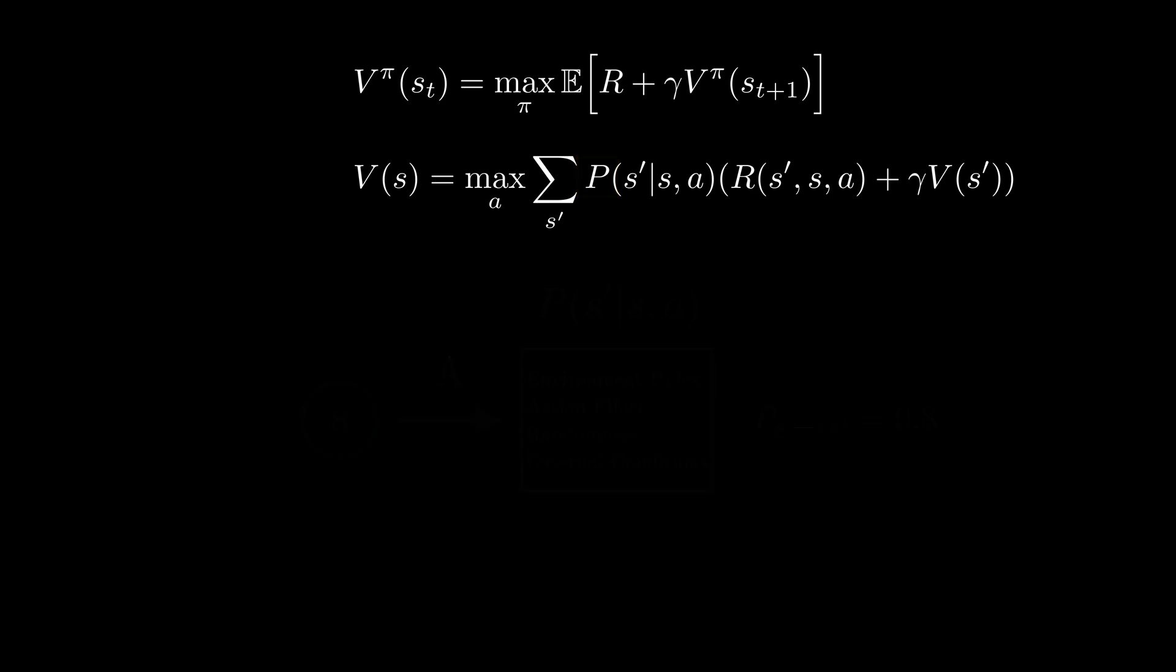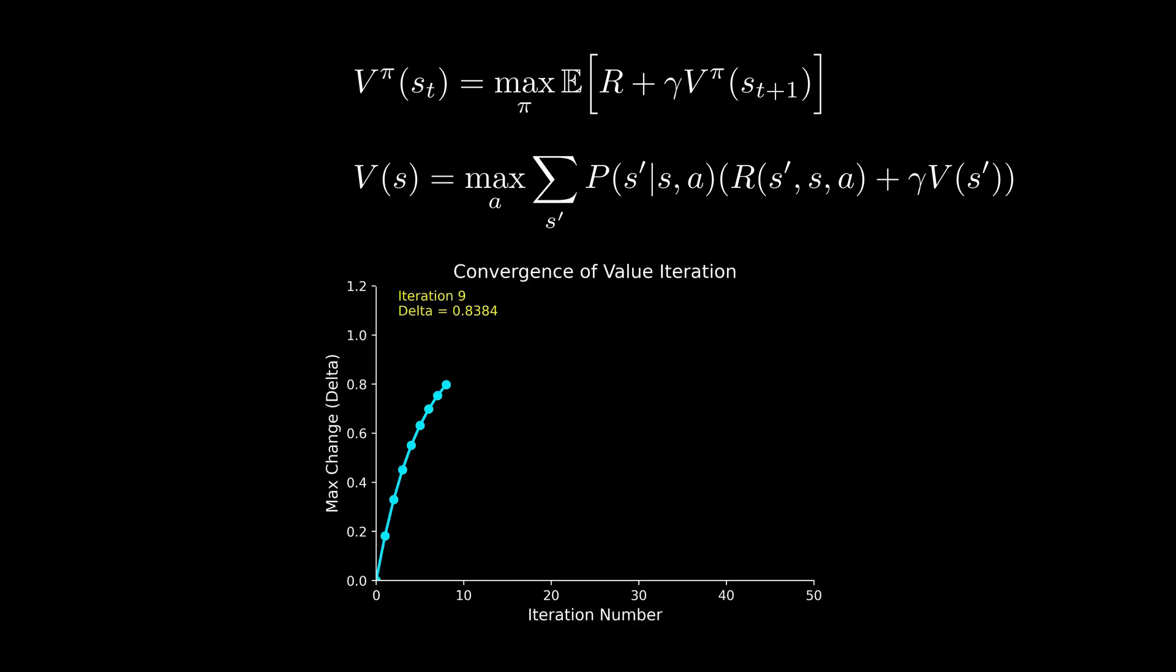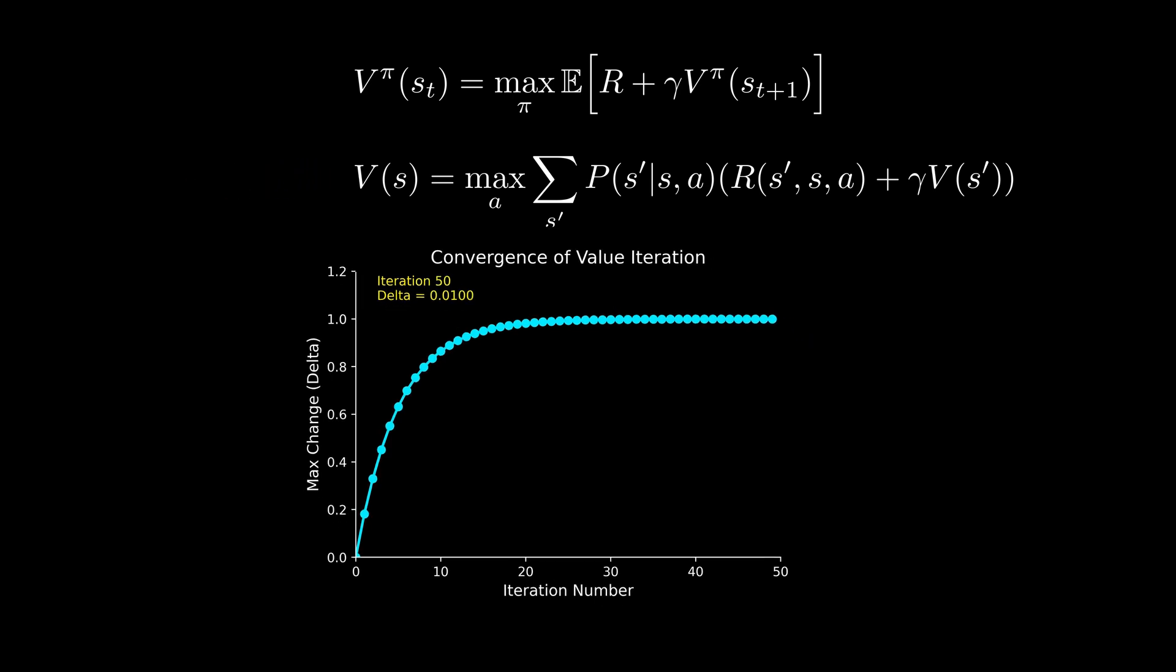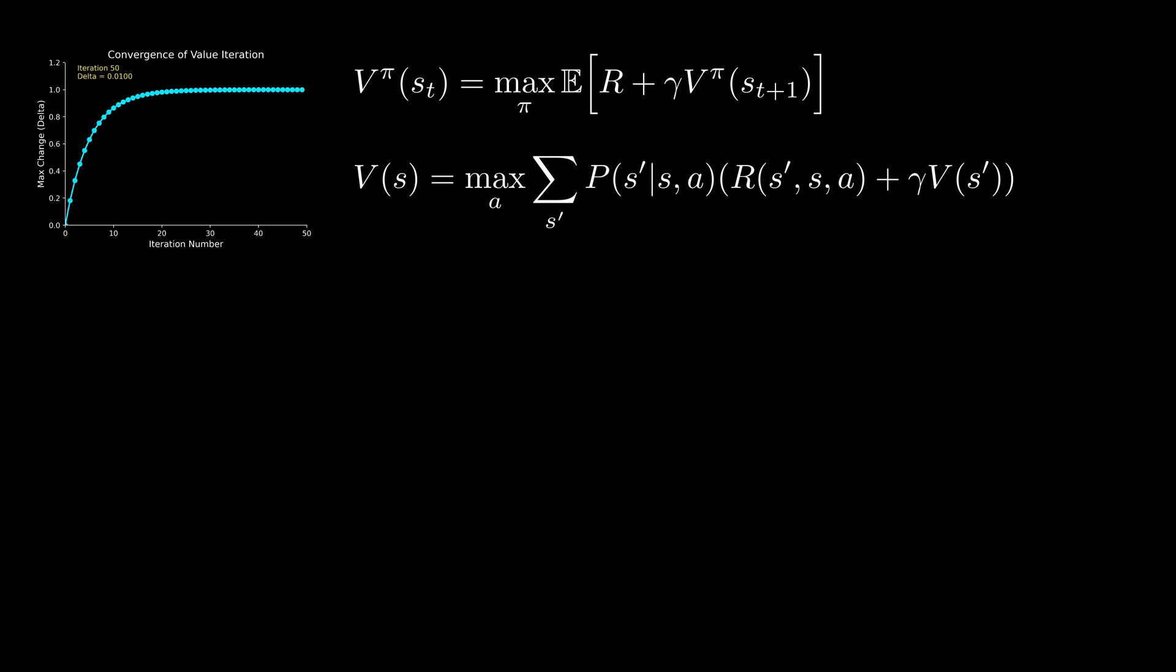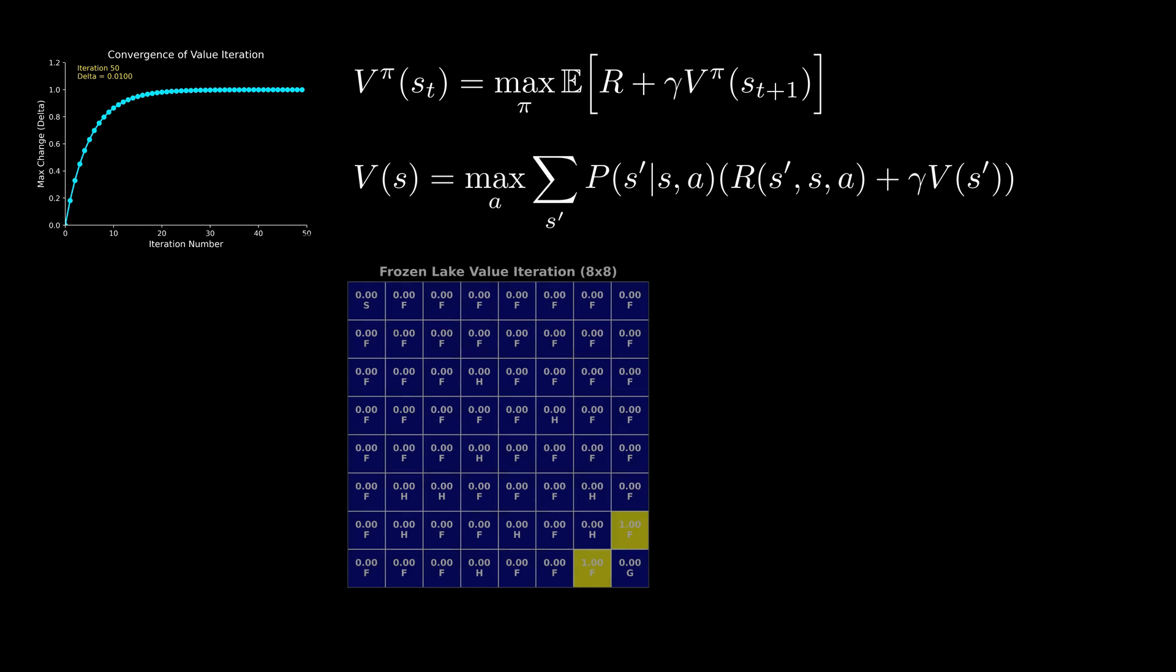Finally, let me walk you through how this last equation can be used practically. One implementation of this involves value iteration, where we iteratively update the value function until it converges. For this purpose, we first give an arbitrary value to all the possible states of the value function V. For example, put all the values to 0.